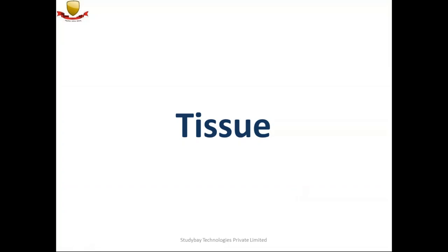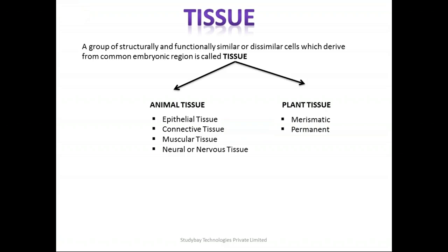Hello students, welcome to Study Bay Technologies. Please find the details of the biology lecture held today at our coaching. We are going to cover the chapter on tissue. Tissue is basically a group of structurally and functionally similar or dissimilar cells which derive from a common embryonic region, and this is called a tissue.